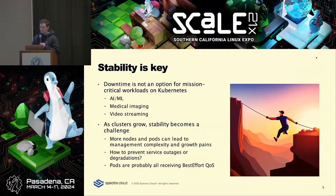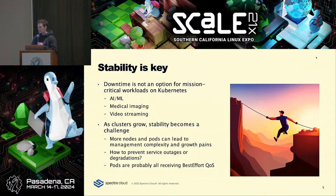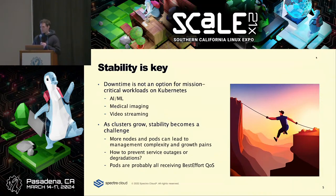A lot of the time you look in an environment and realize that every single pod is receiving best-effort quality of service because people don't even know about quality of service. That relates to whether or not pods have specified resources and/or limits. There are three different QoS classes: guaranteed, burstable, and best effort. In a situation where everything is receiving best-effort QoS and you start encountering node pressure, anything could get evicted.